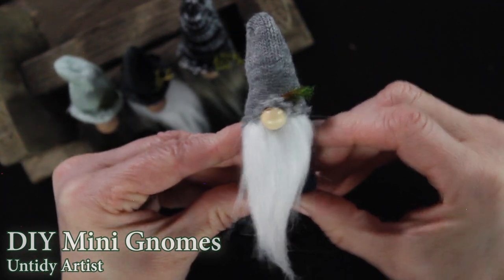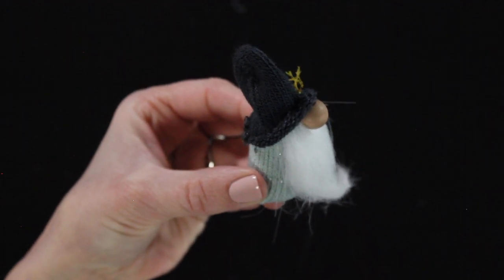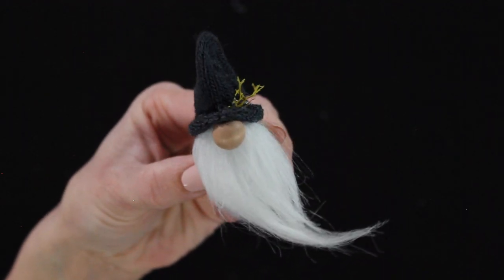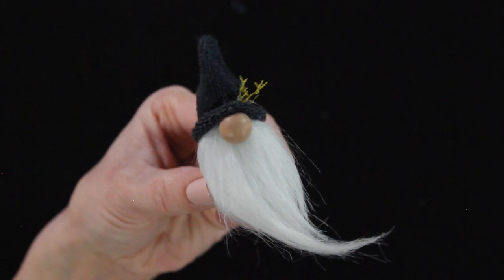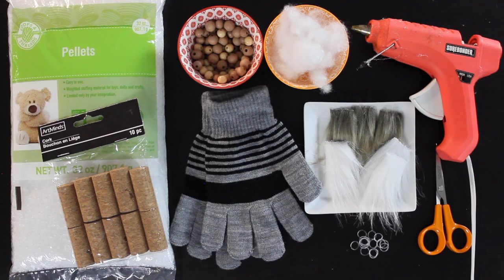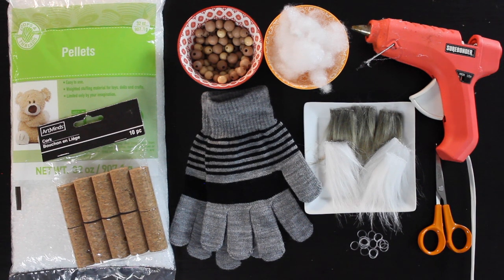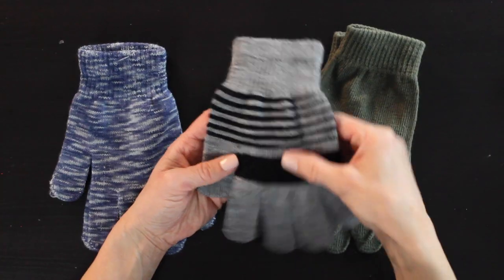You'll want to check out my gnome ornament tutorial where I go through more slowed down steps on how to cut the beard and form the hat. In this tutorial I'm going to go over how to create the base of the body so it will stand. So let's grab some supplies and get started.